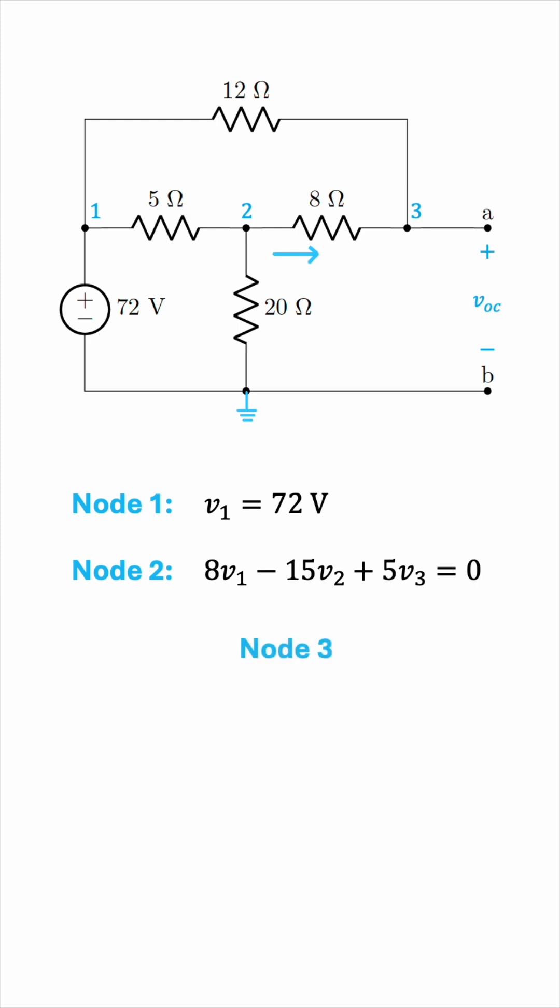And now for node 3. We have this same current that was leaving node 2 and entering node 3, which is V2 minus V3 over 8. But then we have this other current entering node 3, which is given by V1 minus V3 over 12. But note that there is no current leaving V3, because we have an open circuit, so there is no complete path for the current to flow. So the sum of these two currents entering node 3 must be 0, since there is no current leaving.